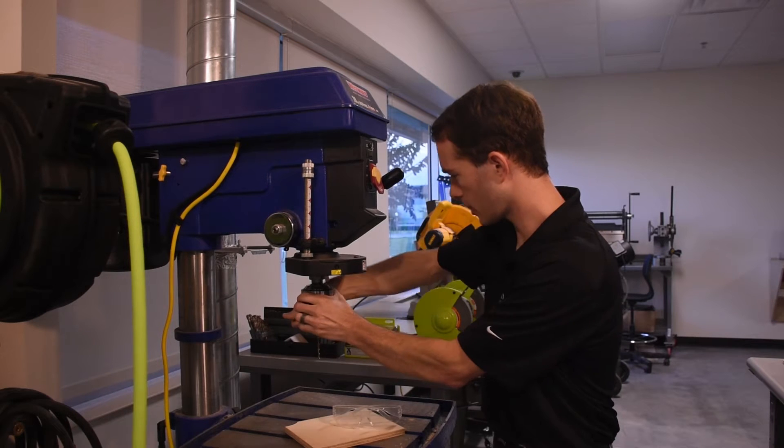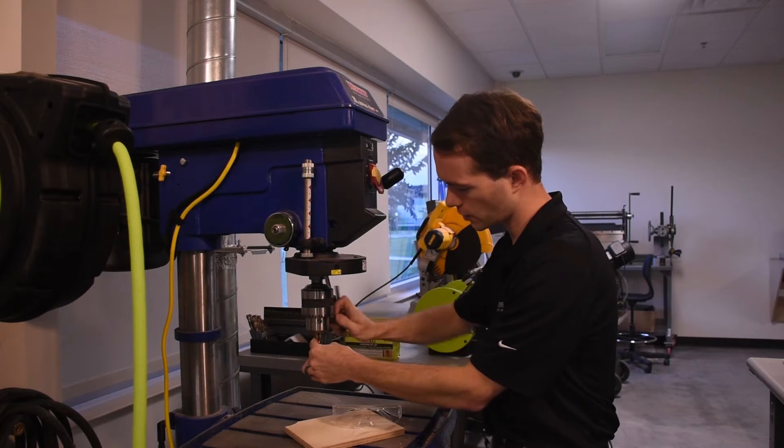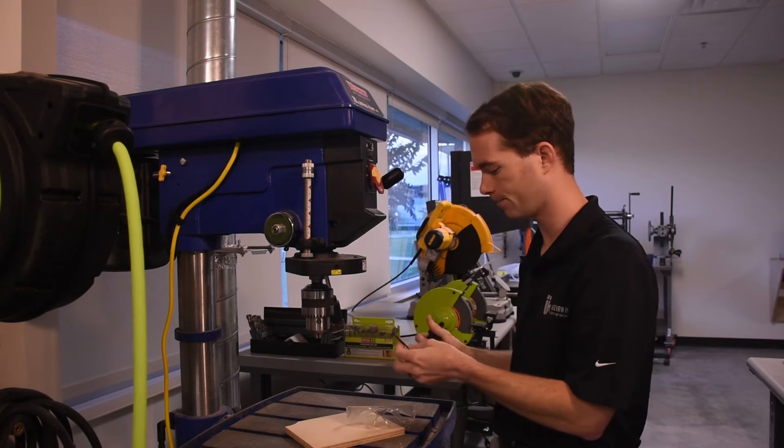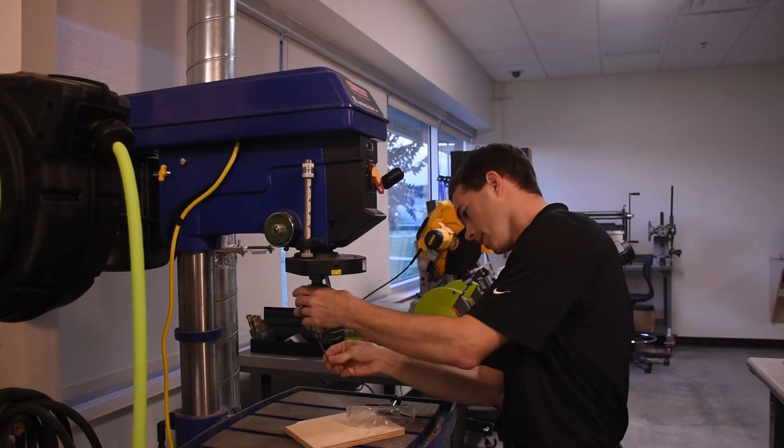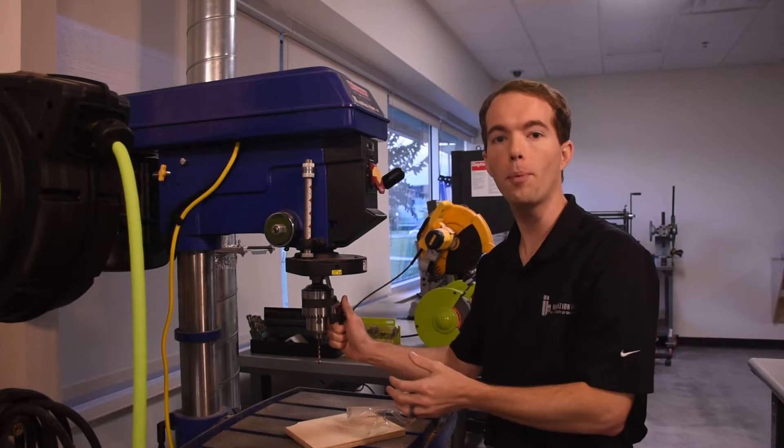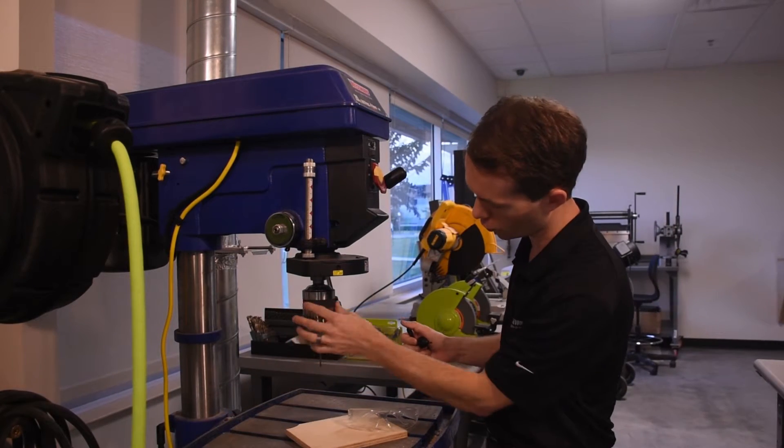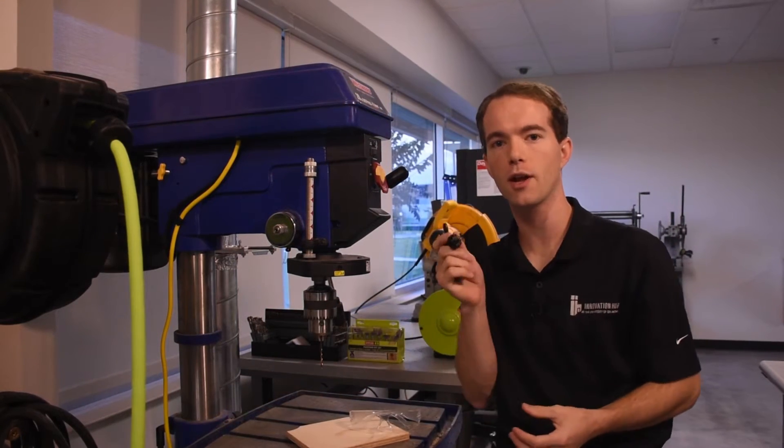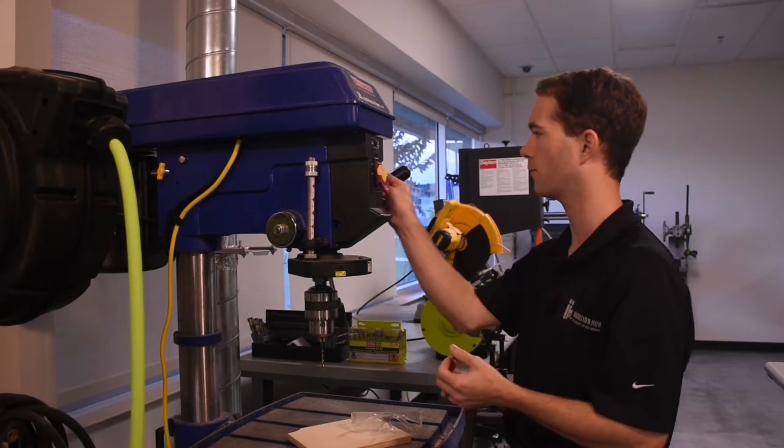So you put it in the chuck counterclockwise to loosen, clockwise to tighten. Just like so. You would hope it would be totally keyless with this knurled part here on the chuck but it's really not. You still have to have the chuck key to really get it in there tight.